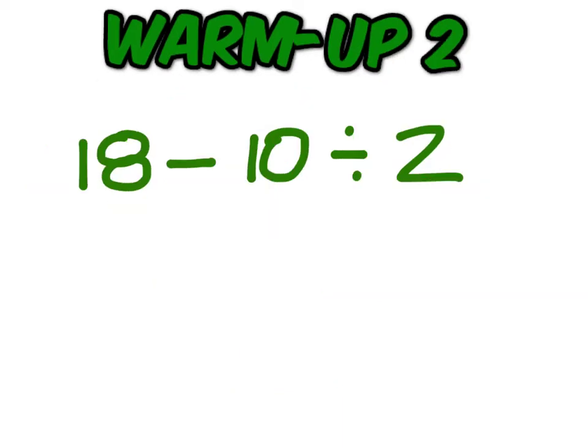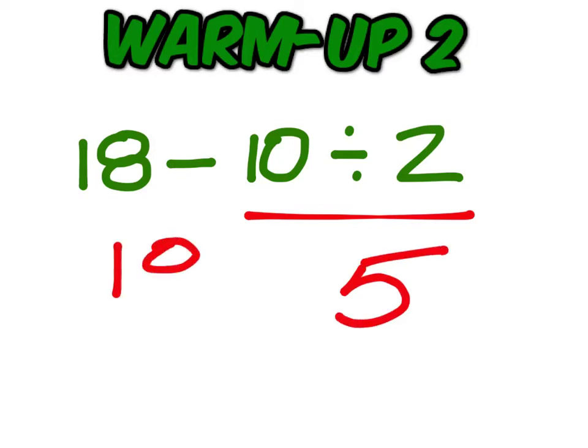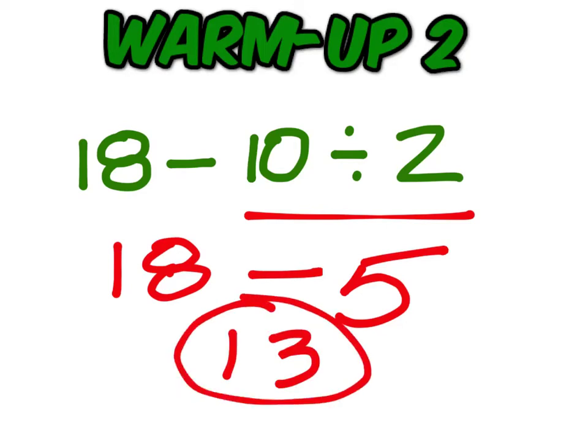Try this one. Bring it up here. On this problem, 10 divided by 2 is 5. You have to do that first, and then you do 18 minus 5 to get 13. If you did 18 minus 10 to get 8 and then divide it by 2, you would have ended up with 4. How you came up with negative 13 in some instances, I do not know.